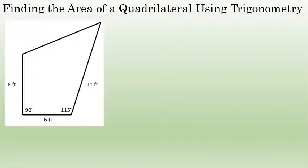Finding the area of this quadrilateral will require trigonometry. This quadrilateral has one 90-degree angle, but that is the only right angle. I certainly can't use the formula for finding the area of a rectangle — base times height — because that only works if all four angles are 90 degrees.